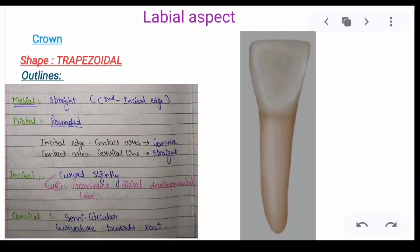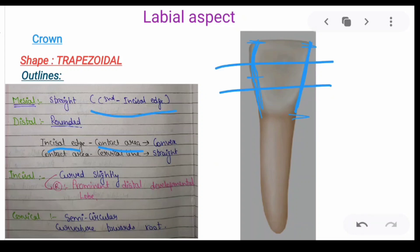Now coming to the outlines. This is a mandibular right lateral incisor. The mesial outline is straight. The distal outline is overall rounded. These are the mesial and distal outlines of the crown.